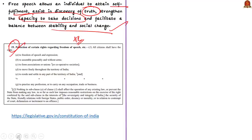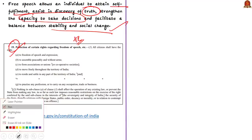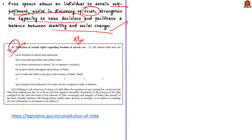Article 19 of the Indian Constitution guarantees freedom of speech and expression to all citizens. However, this freedom is subject to certain restrictions like sovereignty, integrity, security, public order, decency, etc.